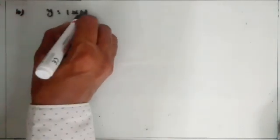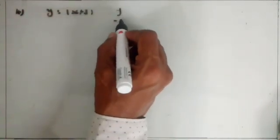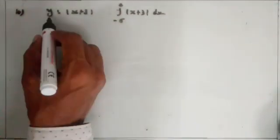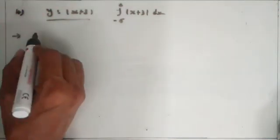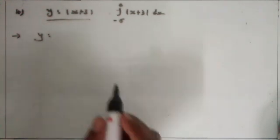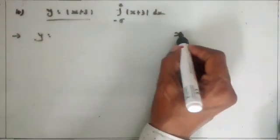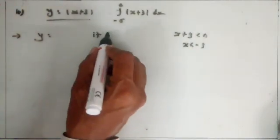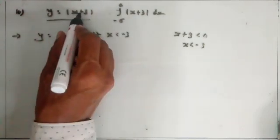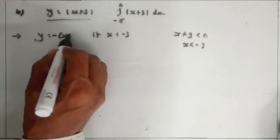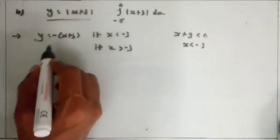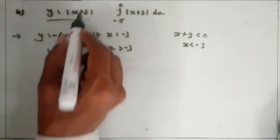Question number 4: sketch the graph of y is equal to mod of (x plus 3) and evaluate the integral from -6 to 0 of mod of (x plus 3) dx. First we sketch the graph of mod of (x plus 3). Here y is equal to mod of (x plus 3) given. So if x plus 3 less than 0, that means x less than minus 3, then x plus 3 is negative, so mod of (x plus 3) becomes minus(x plus 3). And if x greater than minus 3, then x plus 3 is positive, so mod of (x plus 3) is equal to x plus 3.